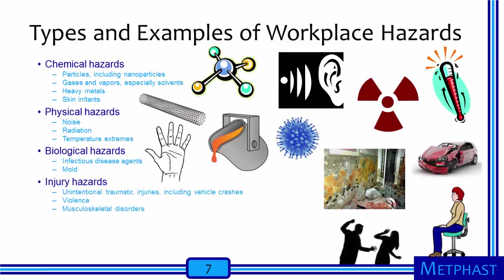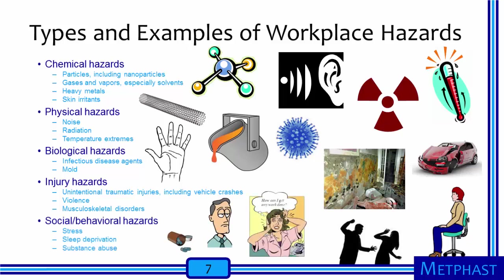There are injury hazards. Unintentional traumatic injuries can occur, including vehicle crashes, which are one of the most common causes of fatalities on the job. Violence, either among coworkers or involving both workers and people from outside the workplace, is an important occupational hazard. In addition, poor ergonomic conditions — including repetitive motion, awkward posture, and heavy lifting — may lead to musculoskeletal disorders. Occupational hygienists may be able to anticipate, but find it hard to recognize, social and behavioral hazards like stress, sleep deprivation, and substance abuse, which can make it difficult for a worker to perform her or his job safely.